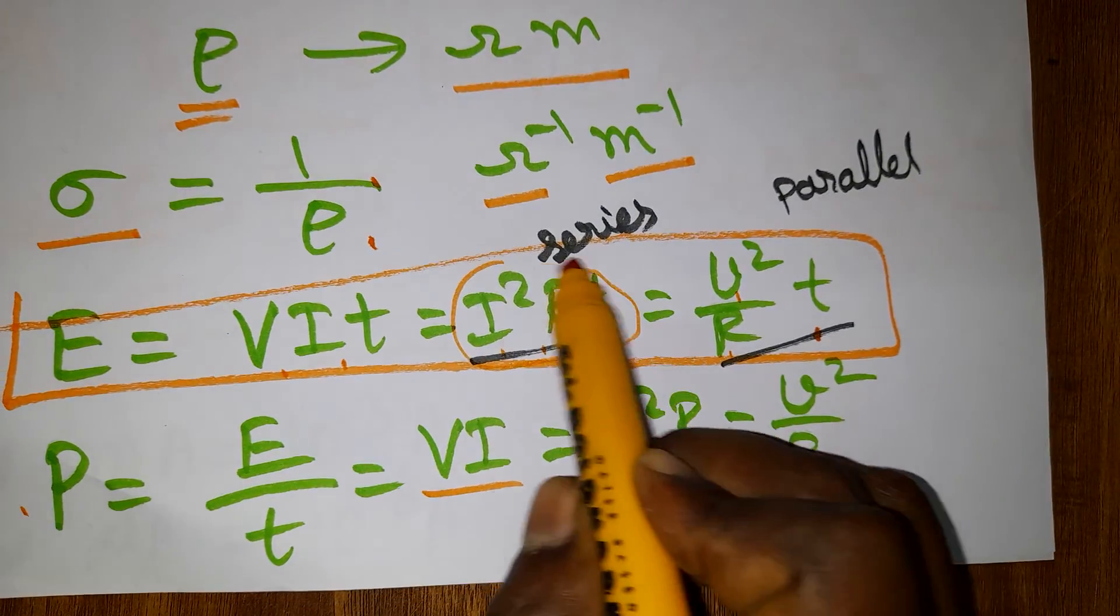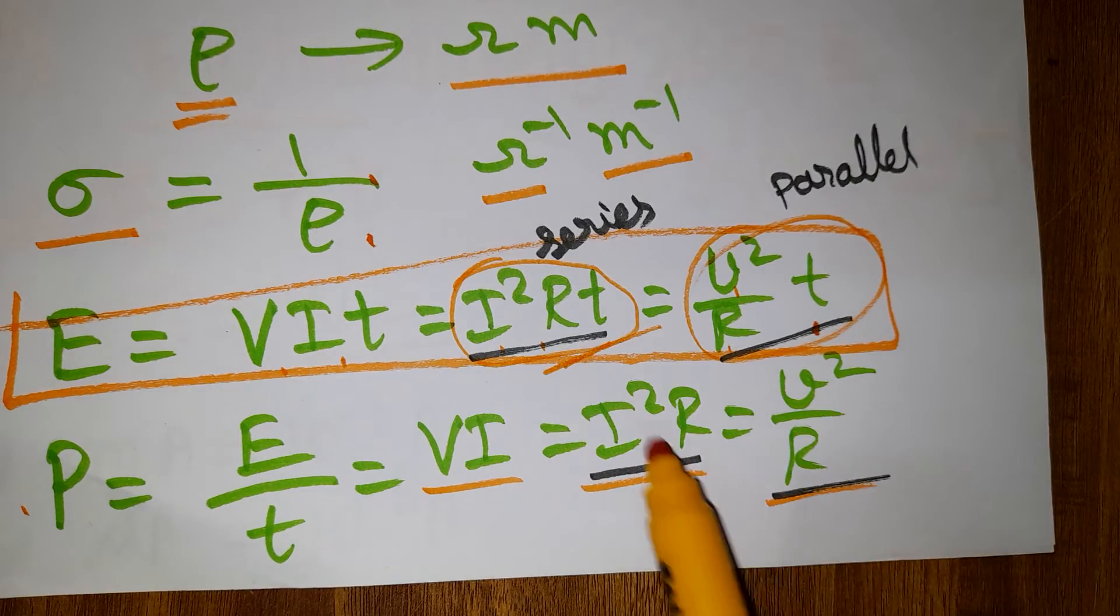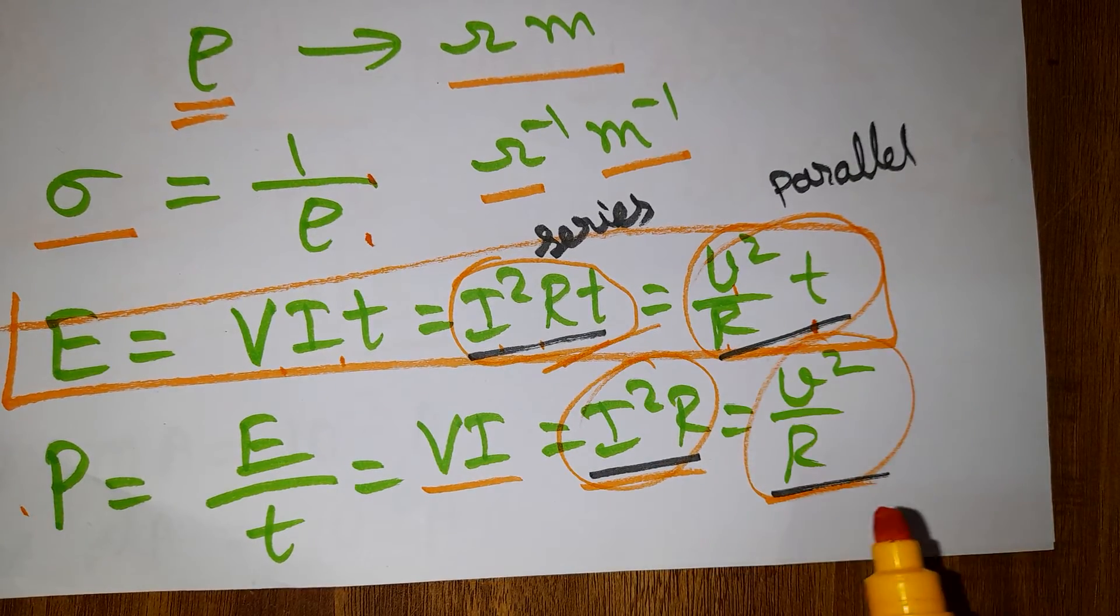This is for series and this is for parallel. Remember, current is constant in series, so these formulas apply to series circuits while those apply to parallel circuits.